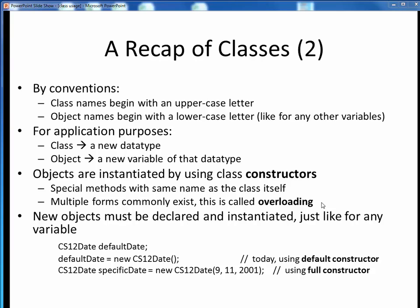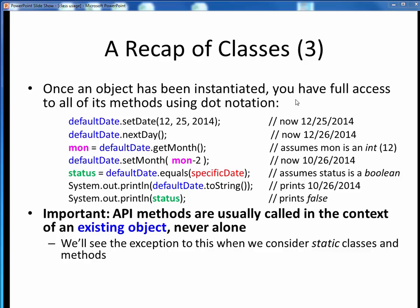Constructors are simply special methods of a class which have the same name as the class itself. It's very common to have multiple versions of the constructor, and we call this overloading. Just like for any other regular variables in Java, objects must be declared and instantiated — stating up front what their data type will be and then giving them some starting value, as we see here in the CS12Date examples using their constructors. Once we have some new object on hand, we then have full access to all of its methods using dot notation, along with a specific object name we're interested in. We must remember that the available methods of any API are always called in the context of some existing object, and never alone. The pattern is typically object dot method. There is one exception to this, but we'll discuss this later when we talk about static classes and methods.